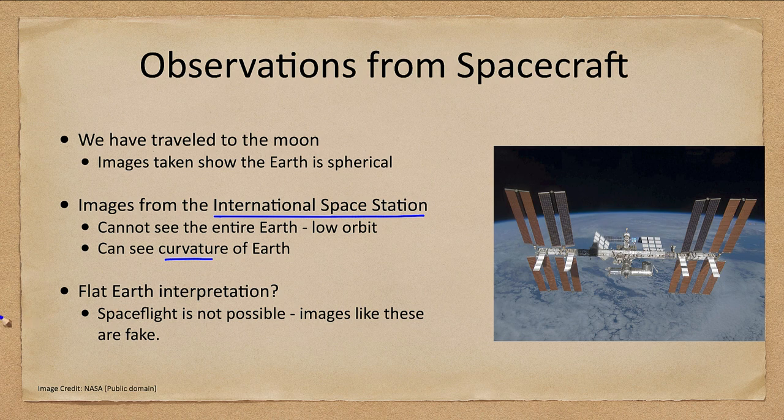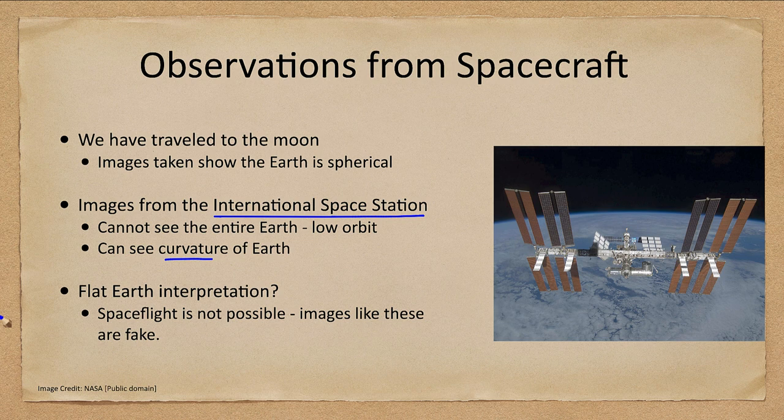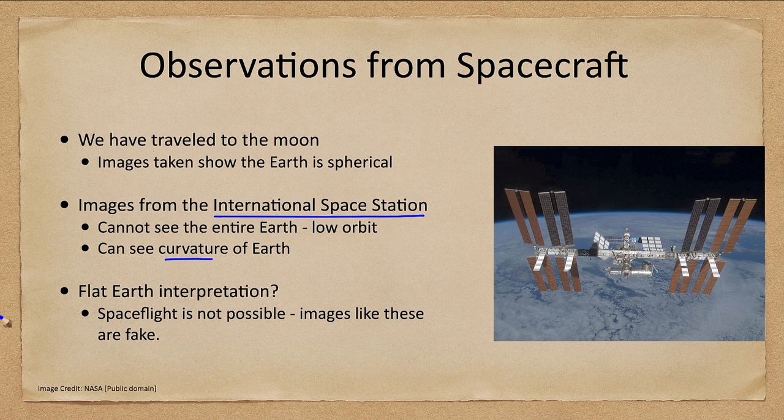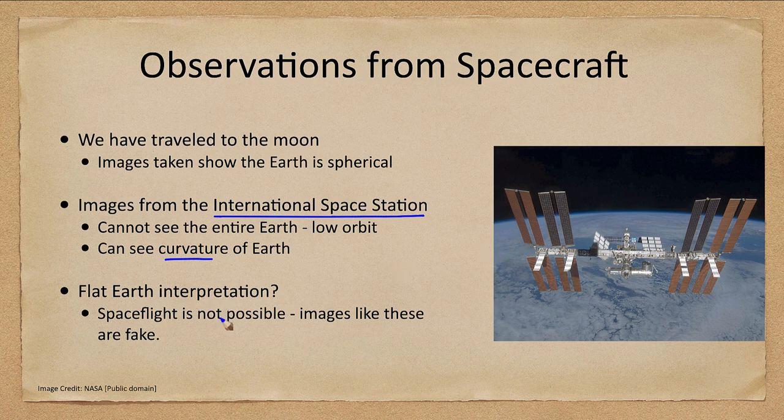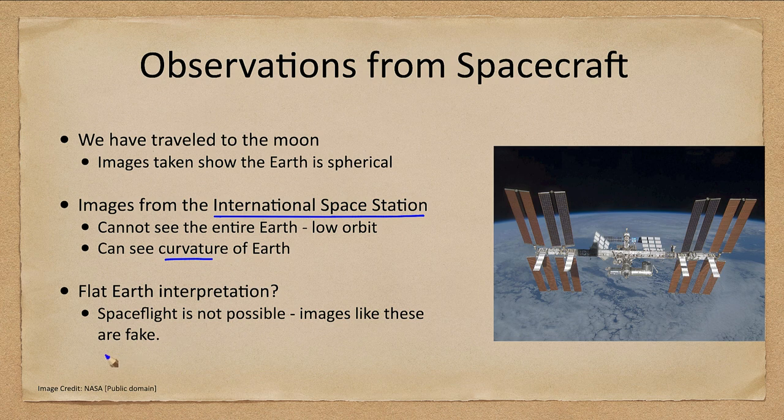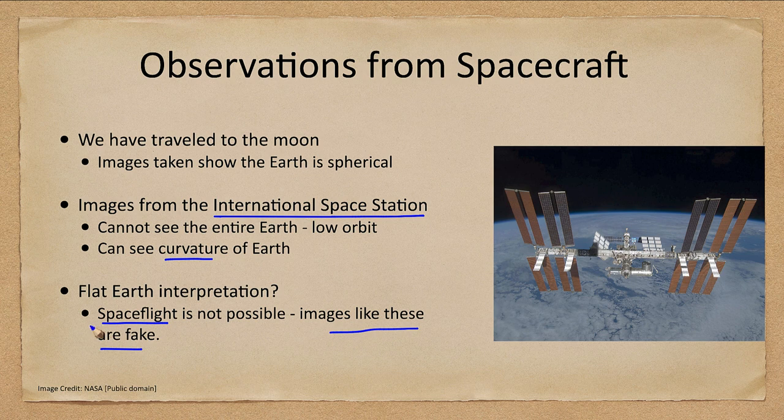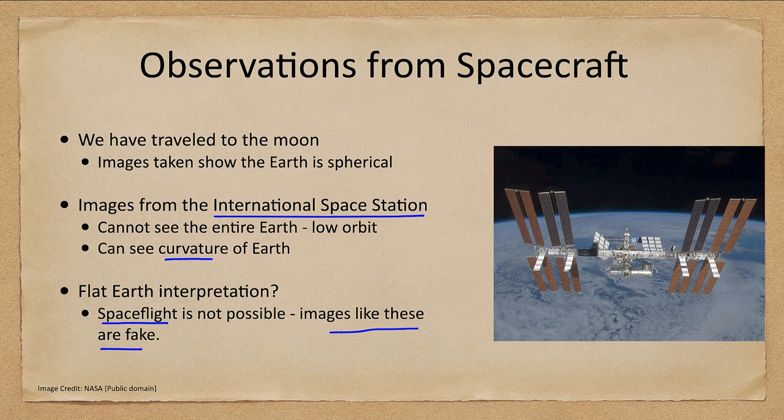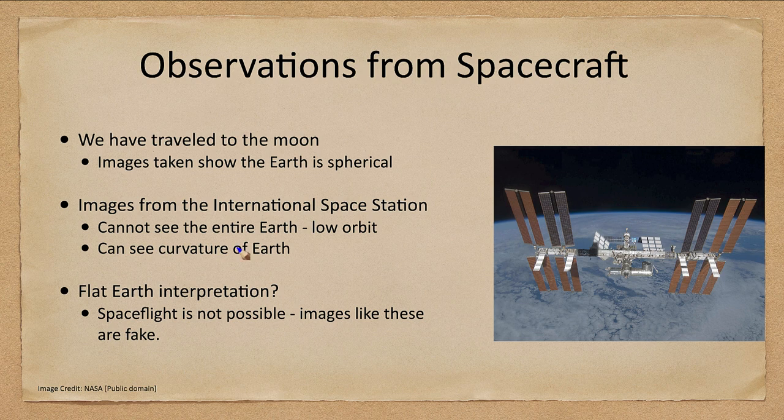Now, you can't see the curvature of Earth when you're down lower because the curvature is so small. You wouldn't notice it even looking at large distances. When you're on the surface of the Earth, you have to get up far enough above it to be able to see that curvature. But here you can clearly see it in the image of the International Space Station. Now the flat Earth interpretation is really that most of what NASA has done is fake, that space flight is not possible, and images like these are completely faked and that no one has gone into space, essentially refuting all of this by saying this simply cannot happen.